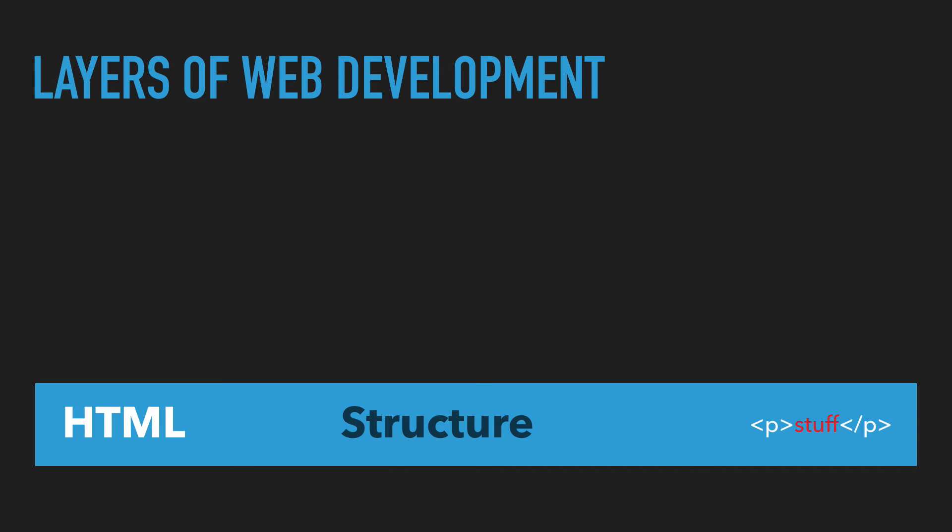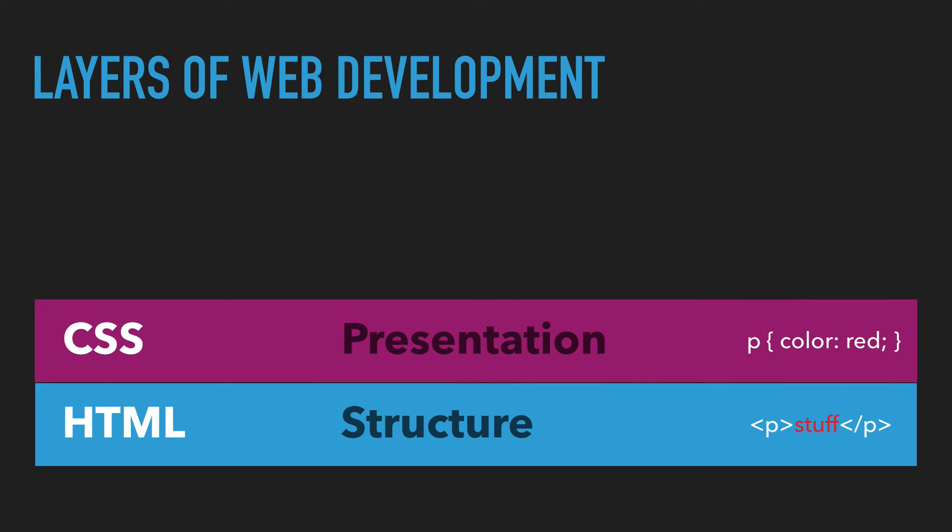Right now on the website, you would just see the word 'stuff' show up in the top left corner. The second layer is the presentation layer, and this is where CSS comes in to actually change the presentation of the website. The structure is the same — we have a paragraph — but now with CSS, this code can change the color of the text of any paragraph. With the P selector and the color property set to red, you can see that 'stuff' is now colored in red.